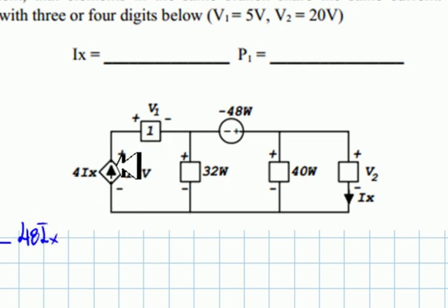And this one, the current is flowing like so, from left to right. So this element is absorbing power. The power is written down as positive. This voltage is 5 times 4IX. That is 20IX.